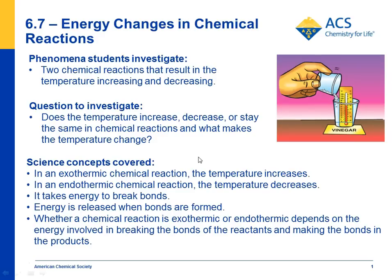The big science concepts covered are: in an exothermic chemical reaction, the temperature increases; in an endothermic reaction, the temperature decreases. Students learn that it takes energy to break bonds of the reactants, and energy is released when bonds are formed to make the products. Whether a reaction is exothermic or endothermic depends on the energy involved in breaking reactant bonds and making product bonds, resulting in a net exothermic or endothermic outcome.